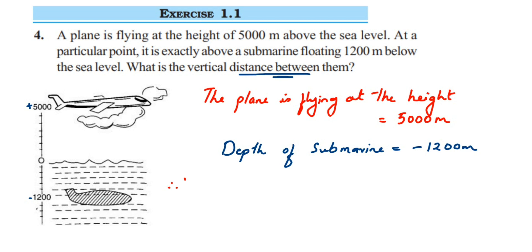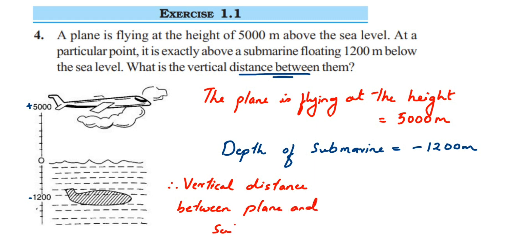Therefore, the vertical distance between the plane and submarine will be equal to: first we take 5000 because it is above the sea level, so 5000 positive, minus the second value which is minus 1200. We are subtracting because they're asking us to find the distance between them — one value is positive and one is negative.